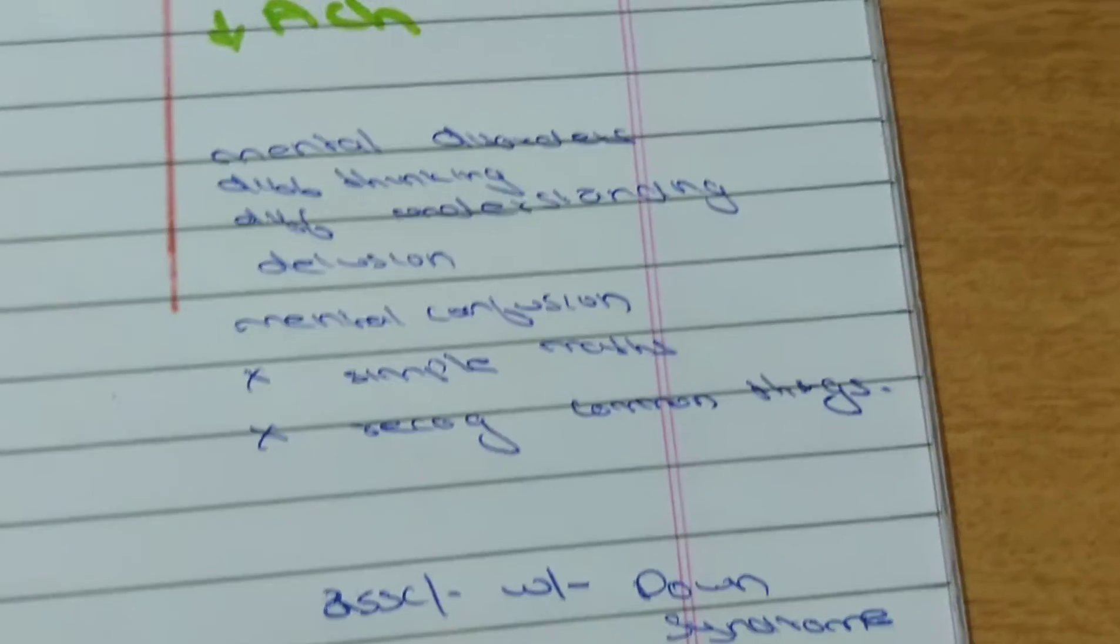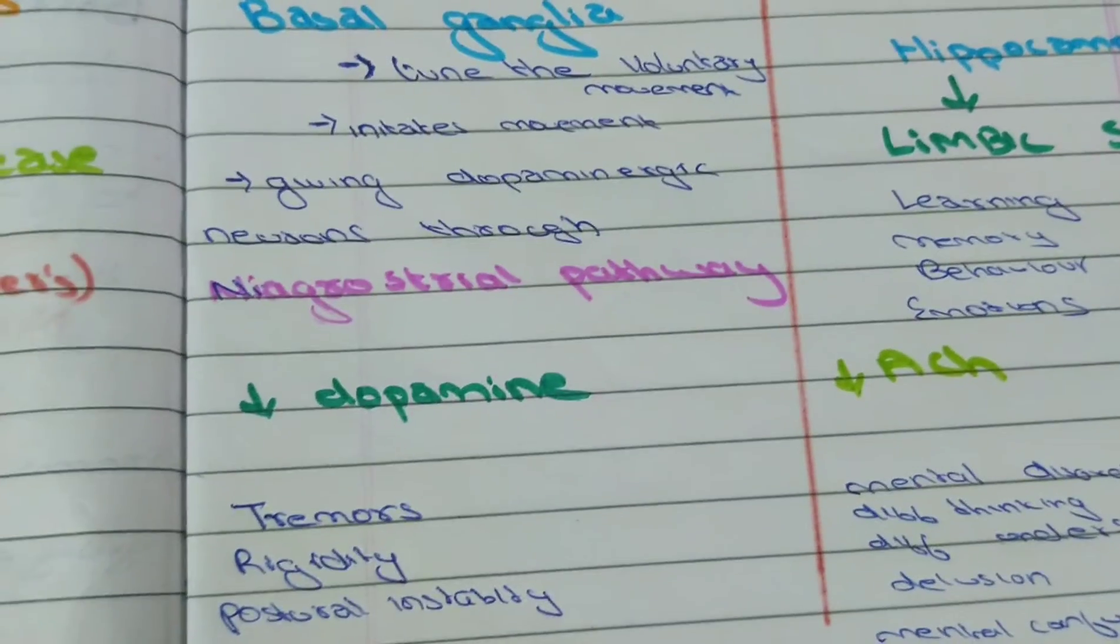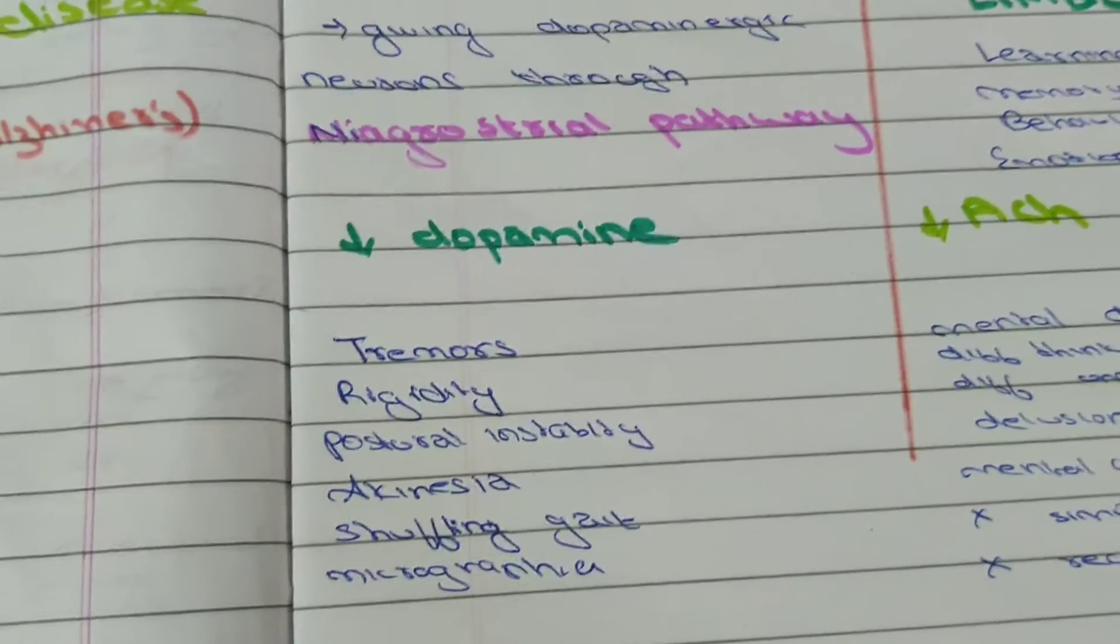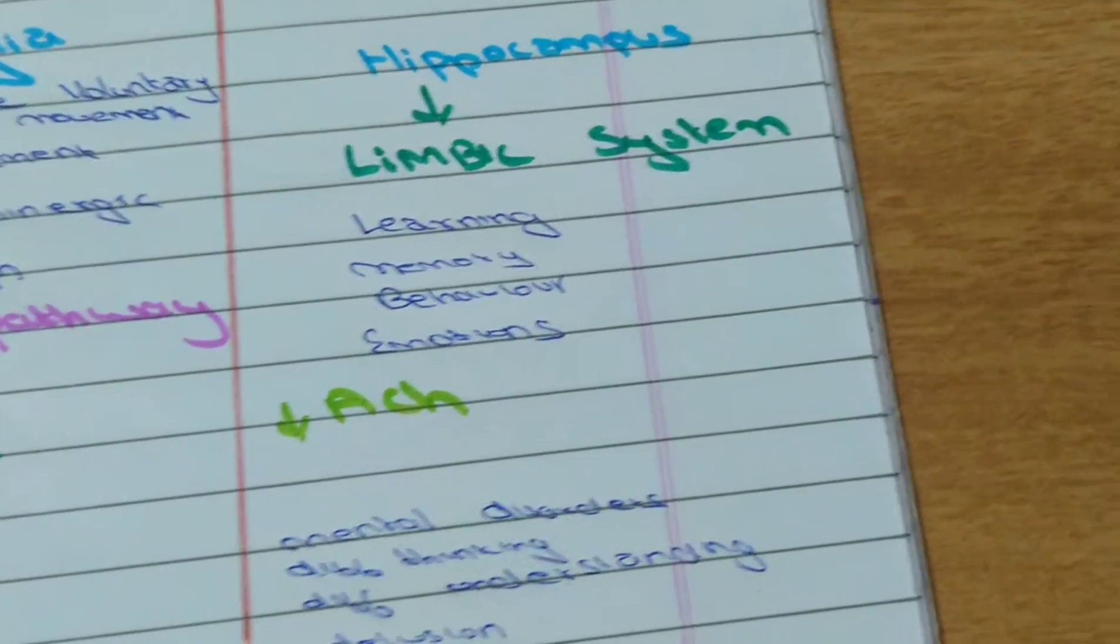Alzheimer's disease is also associated with Down syndrome. In Parkinson's disease there will be less dopamine as substantia nigra pars compacta is involved in the nigrostriatal pathway. Whereas in Alzheimer's disease there will be less acetylcholine.